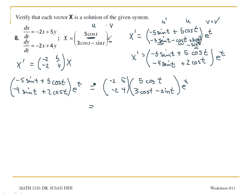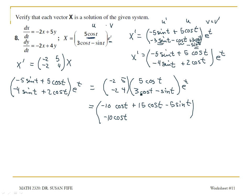I'm going to use matrix multiplication to get the expression on the left side. In the first row: negative 2 times 5 cosine t gives negative 10 cosine t, and 5 times the second row gives plus 15 cosine t minus 5 sine t. In the second row: negative 2 times 5 cosine t gives negative 10 cosine t, and 4 times the second row gives 12 cosine t minus 4 sine t. And e to the t is outside and carries along.